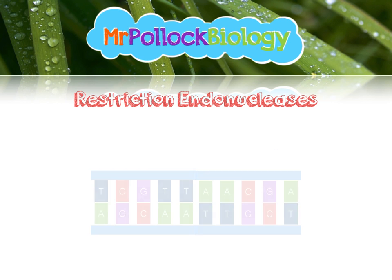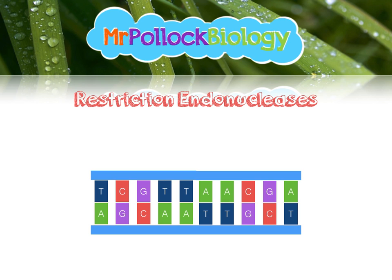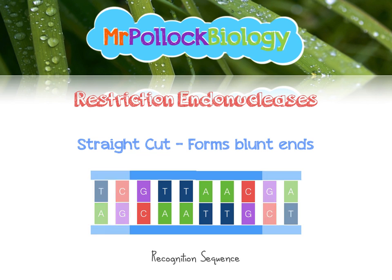Here's a section of DNA. Let's look at what happens if the enzyme cuts in a straight line. The enzymes cut in very specific places — they find something called a recognition sequence, which tells them where to cut. It's a specific base sequence that they recognise. If they cut in a straight line, that forms blunt ends — a straight cut through both strands of the DNA.